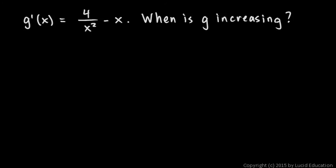So the problem essentially becomes when is this expression positive. We can write this as a simple inequality: 4/x² - x > 0, and we can solve this for x. This is just an algebraic inequality.